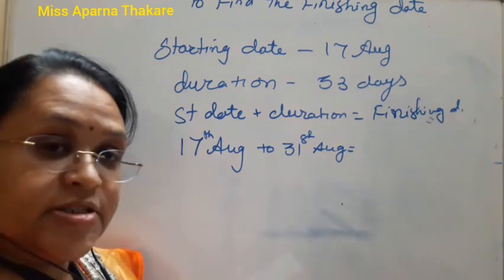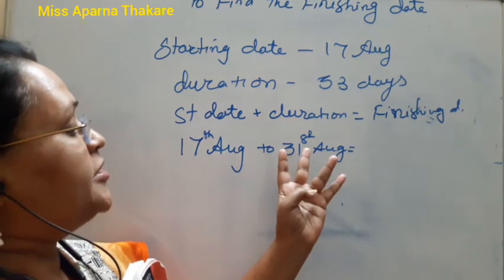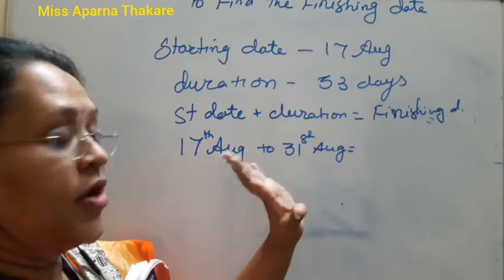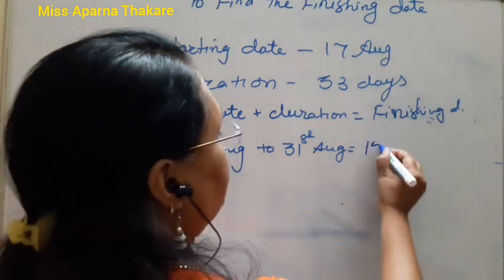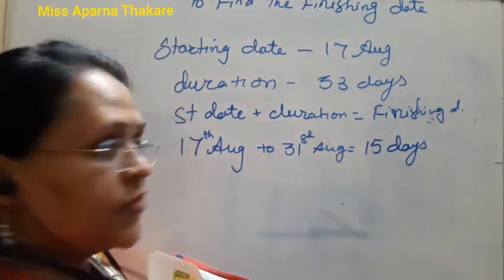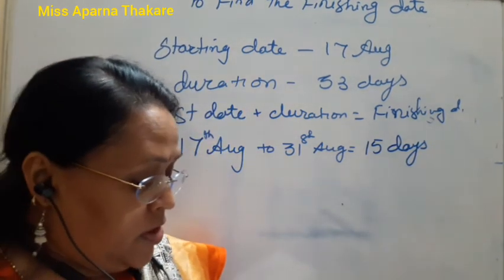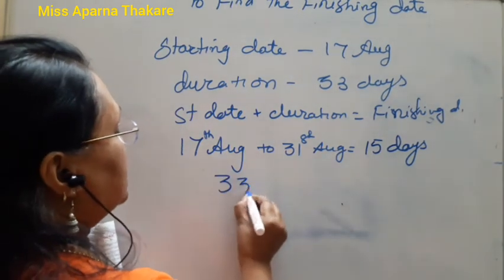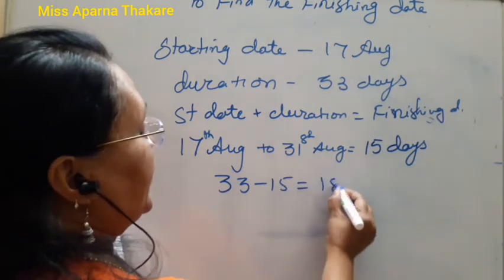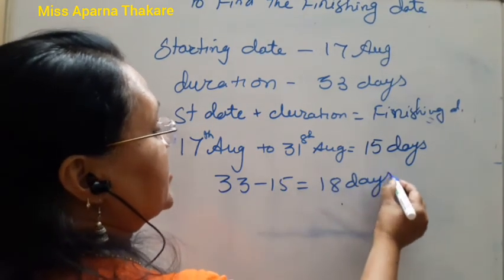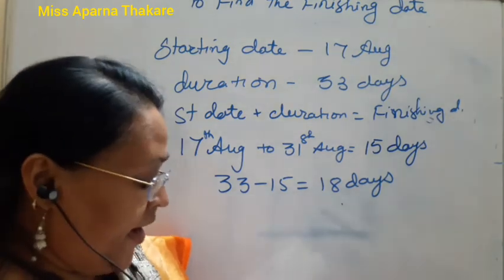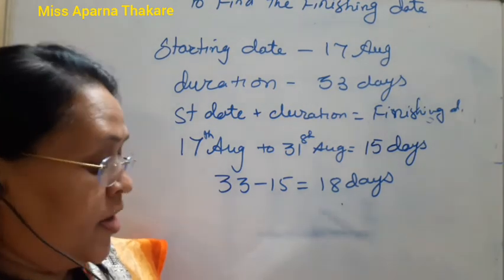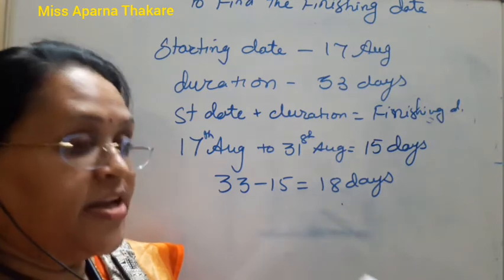Counting: 17, 18, 19, 20, 21, 22, 23, 24, 25, 26, 27, 28, 29, 30, 31 — total 15 days. The remaining days are 33 minus 15, which equals 18 days. So 18 days after 31st August, counting from September 1st, gives us 18th September. So Sudeen finished his training on 18th September.